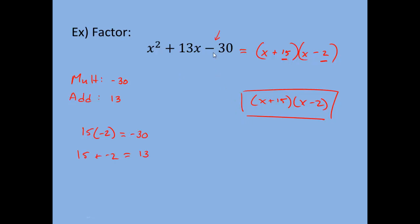Something important to notice: since we had to multiply to a negative 30, meaning the last term was negative, our two numbers had to have opposite signs — one positive, one negative — because that is the only way to multiply to a negative number. The middle sign being positive tells you the larger number has to be positive, which is why 15 is positive and 2 is negative.